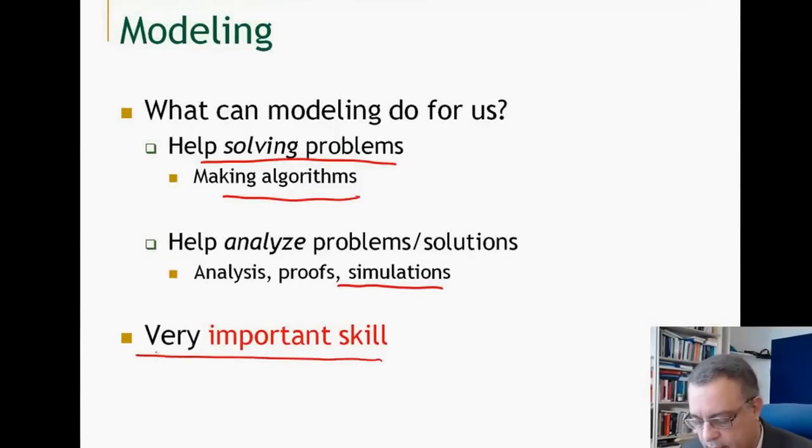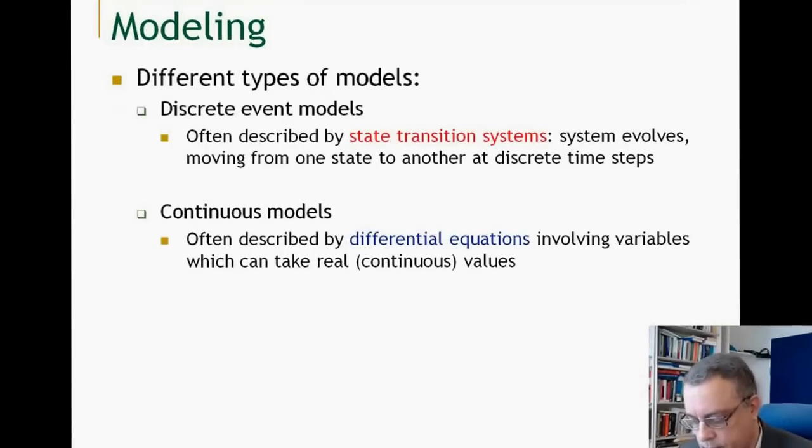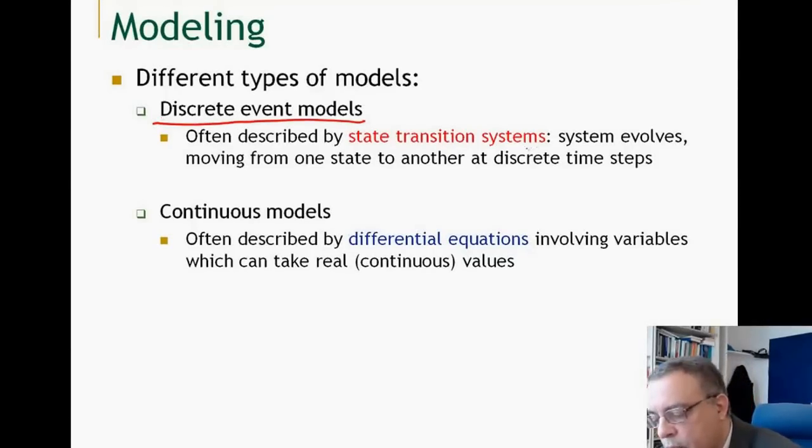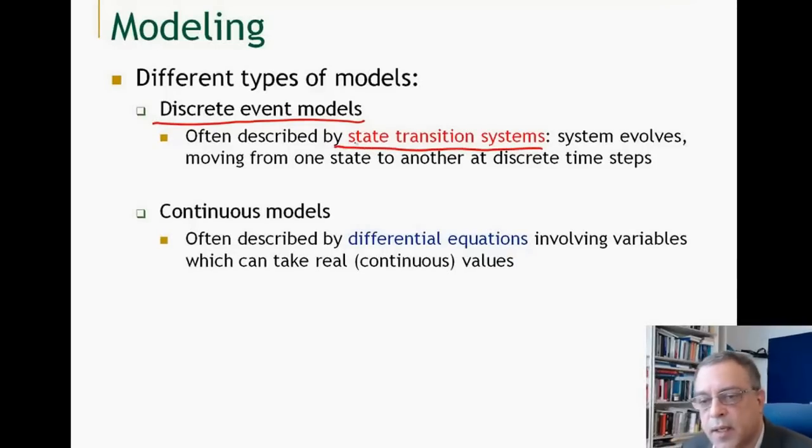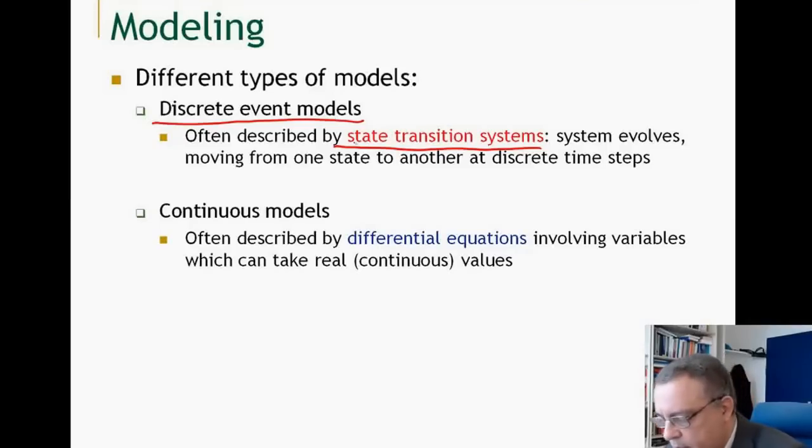Modeling is a very important skill. There are different types of models: discrete event models, which are described by what we will call a state transition system. The evolution of the system is described by a set of states and the system moves from one state to a next state in discrete steps.